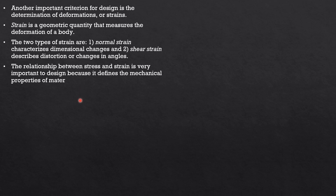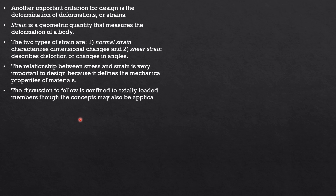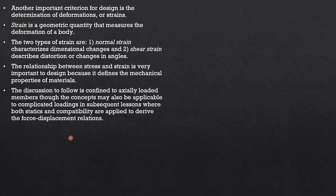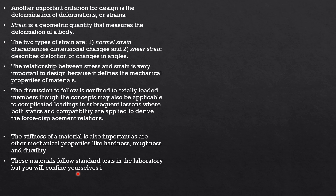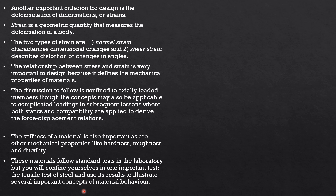The relationship between stress and strain is very important to design because it defines the mechanical properties of materials. The discussion to follow is confined to axially loaded members, though the concepts may also be applicable to complicated loadings in subsequent lessons. The stiffness of a material is also important, as are other mechanical properties like hardness, toughness, and ductility. These materials follow standard tests in the laboratory, focusing on the tensile test of steel.